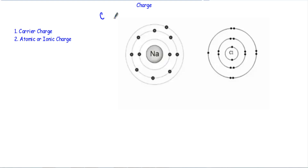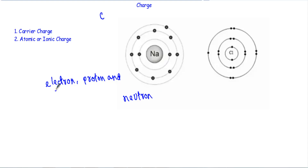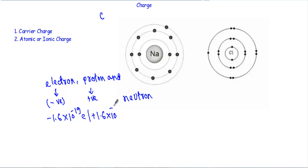We measure charge in Coulombs, expressed as C. Each atom consists of electrons, protons, and neutrons. The electron has a negative charge equal to -1.6 × 10⁻¹⁹ Coulombs. The proton has a positive charge of +1.6 × 10⁻¹⁹ Coulombs, and the neutron is charge neutral. Broadly, charges are classified into two types: carrier charge and atomic or ionic charge.